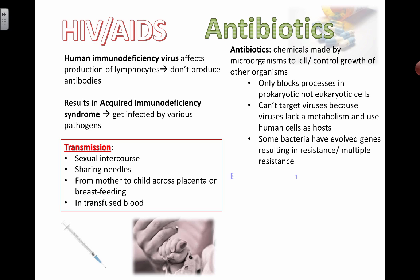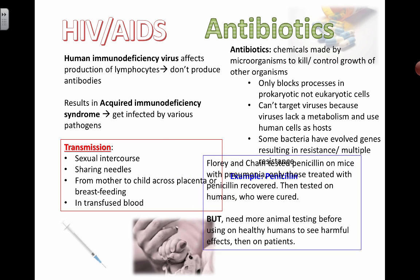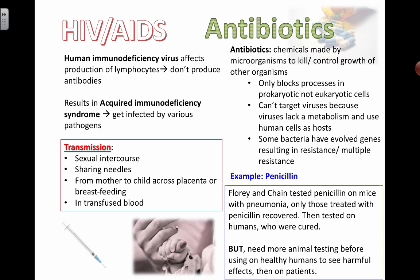One example of an antibiotic is penicillin, which is still used today. Penicillin was discovered by Florey and Chain, who tested it on mice with pneumonia — only those treated with penicillin actually recovered. They gave some mice real penicillin and others a fake version, and were able to tell the difference. They then started testing on humans who were cured as a result, and we now know that penicillin can be used as an antibiotic to help cure people of disease.